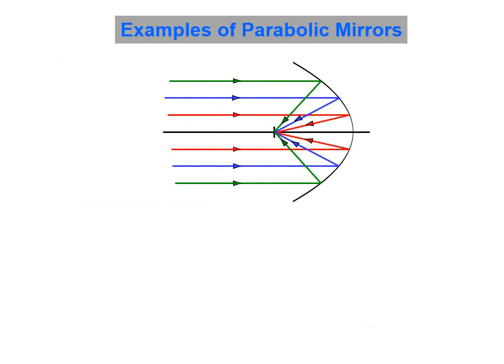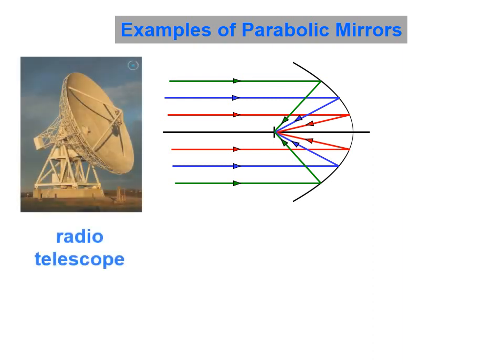So here are some examples of parabolic mirrors. If we have a parabolic mirror with rays incoming, those rays can be reflected to converge right at the focal point. If we have, for example, a very dilute radio signal, we could use a parabolic mirror to concentrate or intensify that signal by reflecting all of those at a particular point.